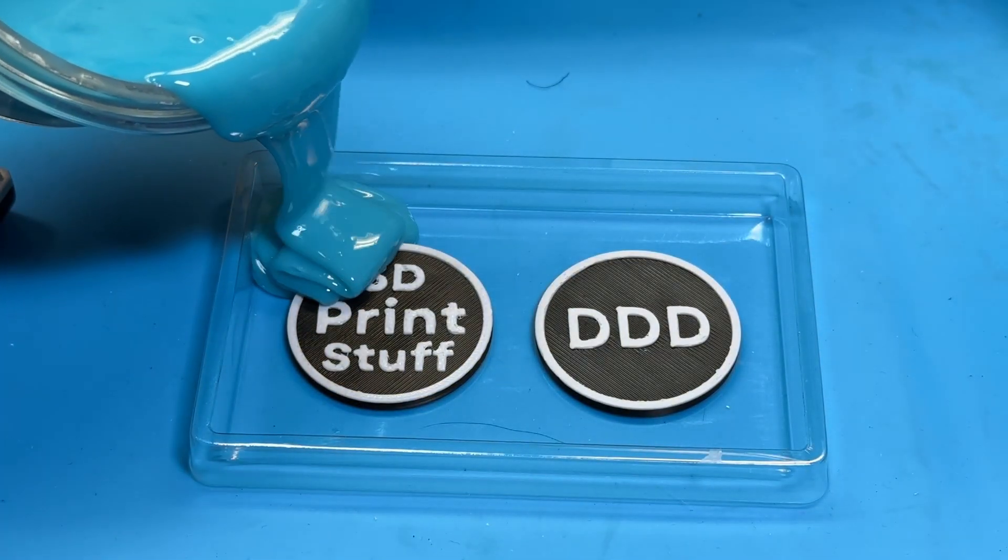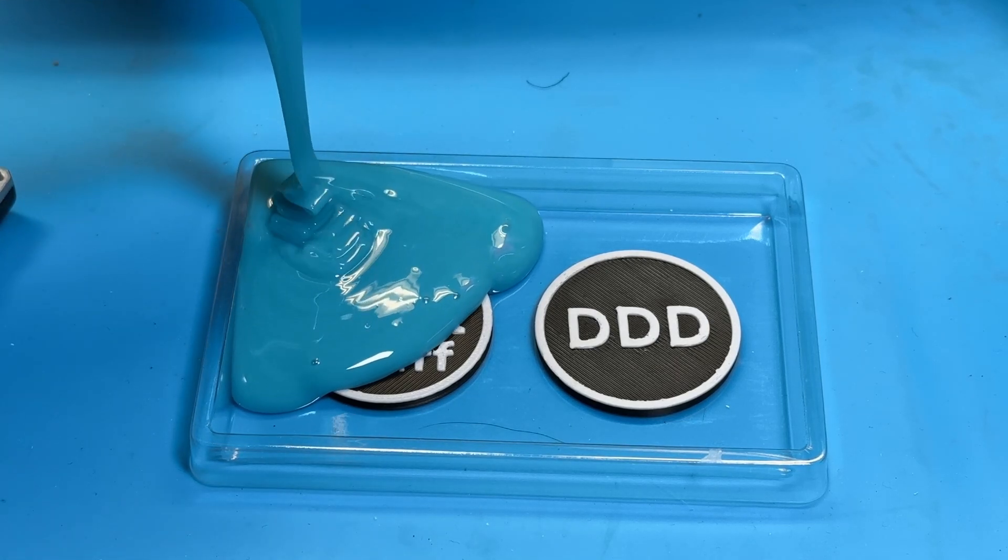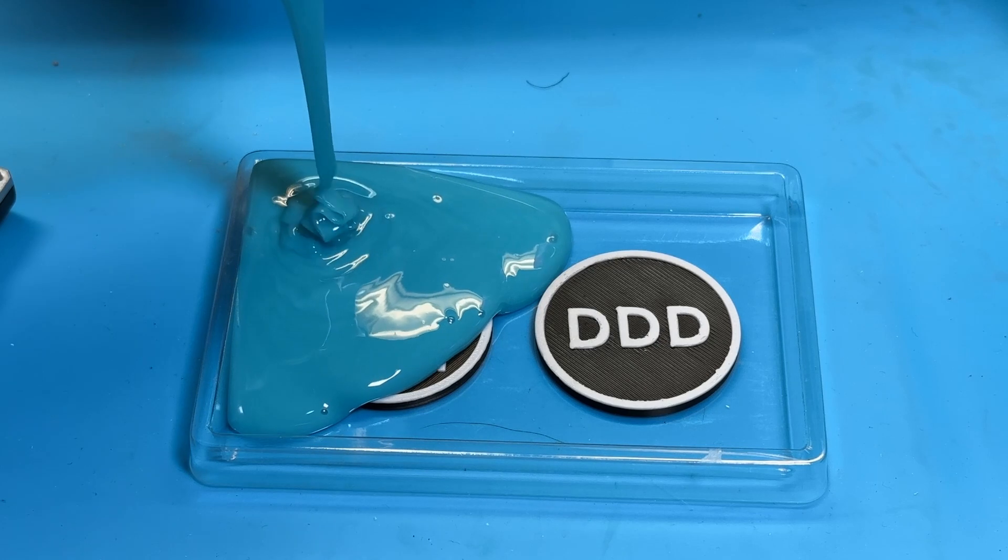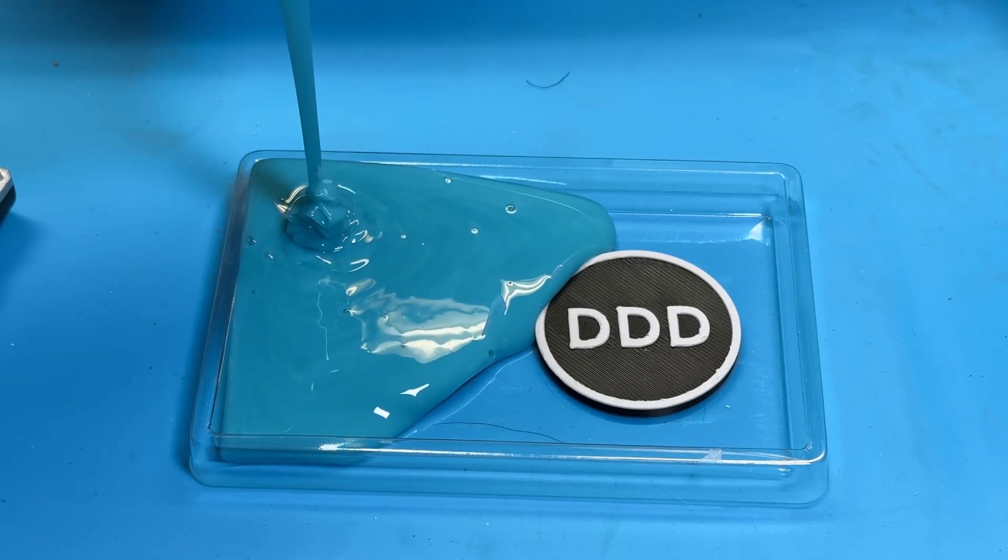Once it's mixed thoroughly I can pour it over the two coins starting in the one corner and trying to make a very thin stream so that any bubbles that are trapped can pop during the stream and just letting it fill the entire mold.